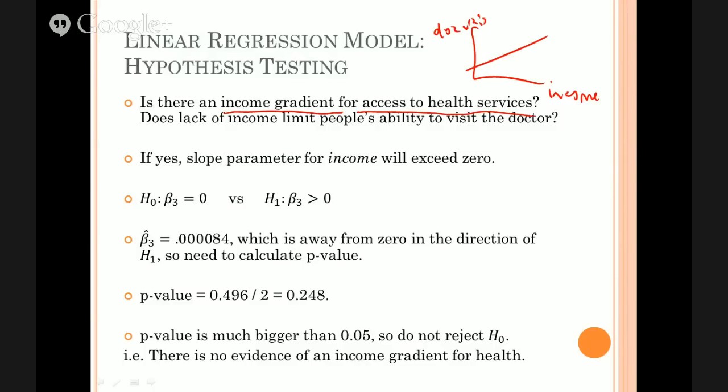So that very important question can be boiled down to, in this particular case here, whether or not the slope parameter for income is zero. And we've said greater than zero is our alternative because the public policy issue here is about whether or not people can afford to go to the doctor. So if there is an effect of income, it'll be a positive effect. Richer people will go more. So we are looking for the alternative hypothesis being greater than zero.